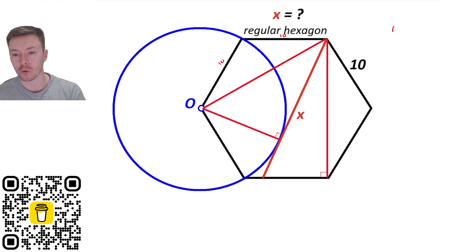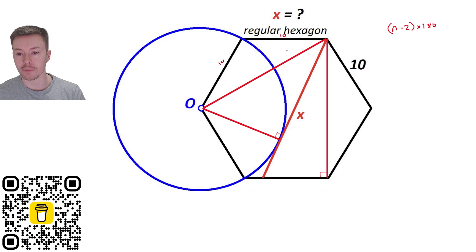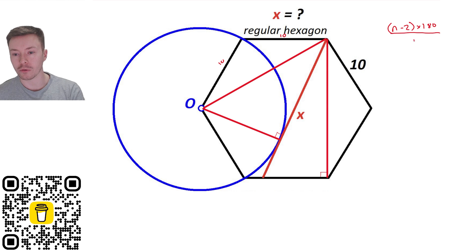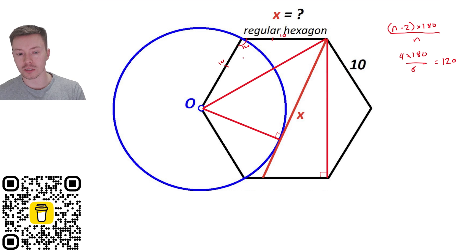Using the interior angle formula: (n − 2) × 180 divided by n. With six sides, that's 4 × 180 divided by 6, giving us 120 degrees. So each interior angle is 120 degrees. This triangle is isosceles because both sides are 10, so 180 minus 120 gives 60, split between the two base angles gives us 30 degrees each.